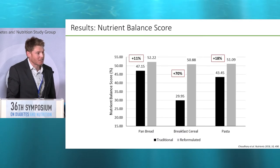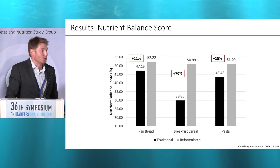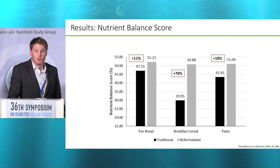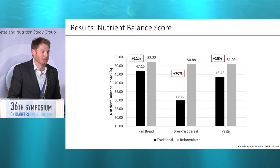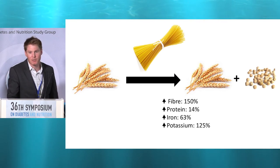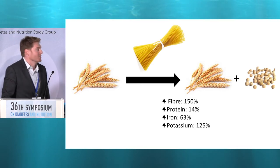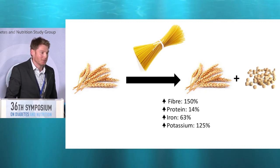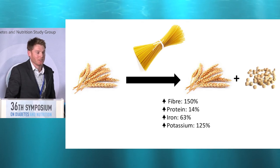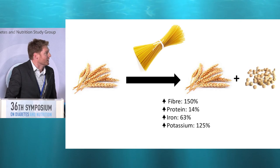Results of the study demonstrated, as expected, that reformulation with whole yellow pea flour in staple cereal foods increased the nutrient balance score by 11%, 70%, and 18% across pan bread, breakfast cereal, and pasta respectively. To give you an idea around some of these nutrients that were increased — for the pasta with that 30% displacement, we got a 150% increase in dietary fiber, a 14% increase in protein, a 63% increase in iron, and a 125% increase in potassium.